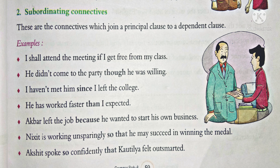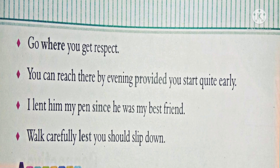Nikshit is working untiringly so that he may succeed in winning the medal — here, 'so that' is the subordinating connective. Akshit spoke so confidently that Cotillio felt outsmarted — in this sentence, 'so' and 'that' are two subordinating connectives. Go where you get respect — 'where' is the subordinating connective. You can reach there by evening provided you start quite early — 'provided' is the subordinating connective.